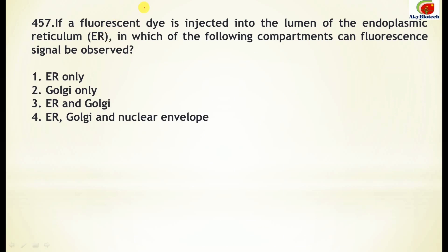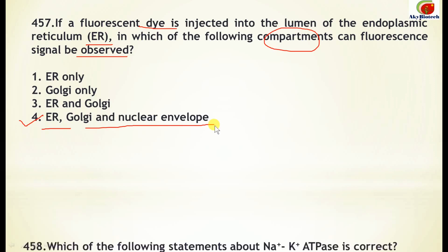Question 457: If a fluorescent dye is injected into the lumen of the ER (endoplasmic reticulum), in which compartments can the fluorescent signal be observed? The correct answer is: the ER, Golgi, and nuclear envelope.